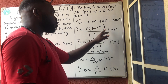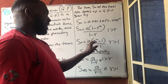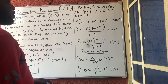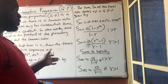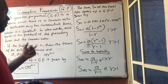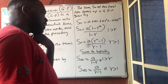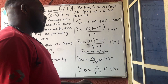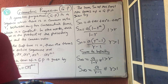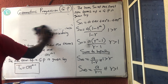When 1 is greater than R, we use A(1 − R^n) / (1 − R). When R is greater than 1, we use A(R^n − 1) / (R − 1). For the sum to infinity: if 1 is greater than R, it's A / (1 − R). If R is greater than 1, it's A / (R − 1). So those are the three key formula types you need to know.